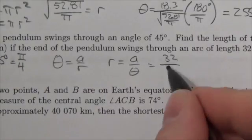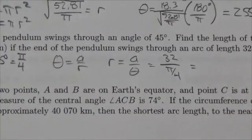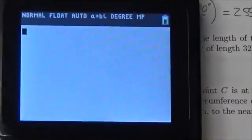This is going to be 32 divided by pi over 4, and I might go to my calculator here because I'm going to get a pi in there. So let's let the calculator handle that.